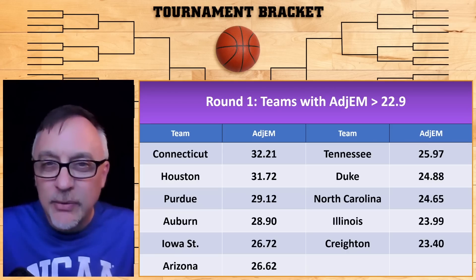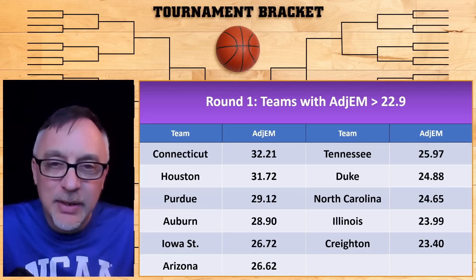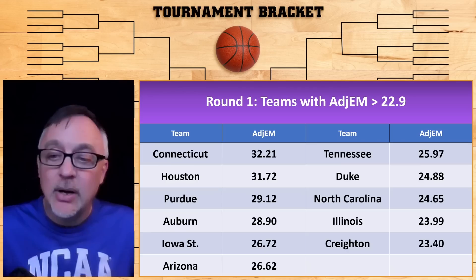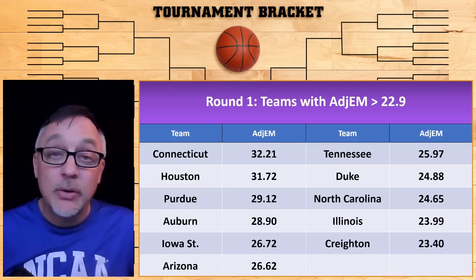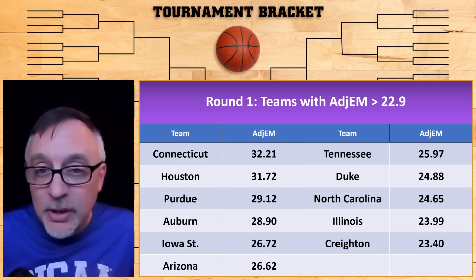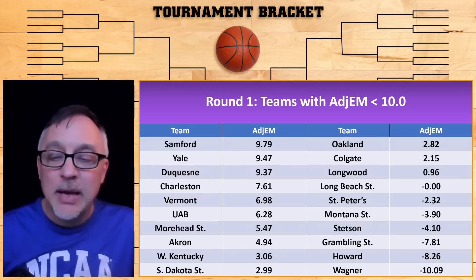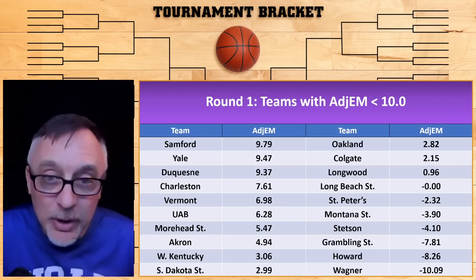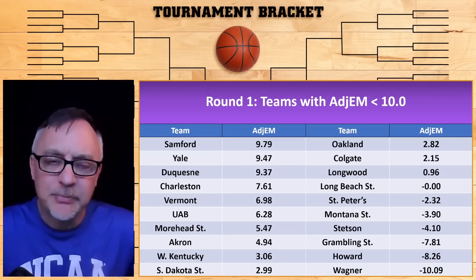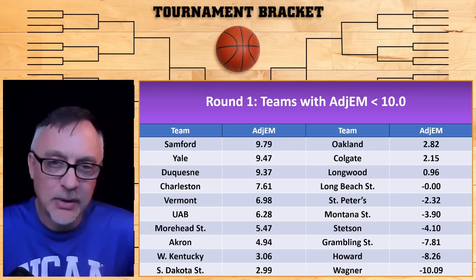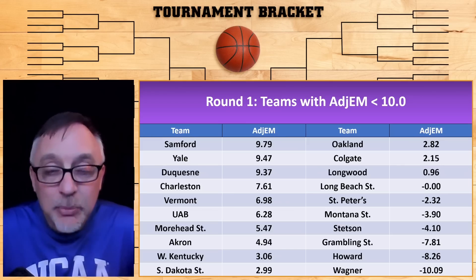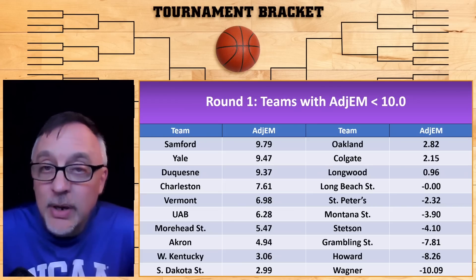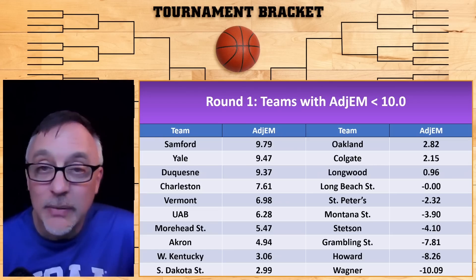Here are the teams with adjusted efficiency margin above 22.9 in the 2024 tournament — the top 11 teams in the KenPom rankings. They all have adjusted efficiency margins over 22.9, and according to that stat, 88% of these teams will advance past round one. Here are the teams with adjusted efficiency margin less than 10.0 — the teams at the bottom of the brackets we'll pick to lose. According to this stat, which holds at 90% since 2001, any team with an adjusted efficiency margin below 10.0 loses in round one at 90%, so I'm going to pick all of these teams to lose.